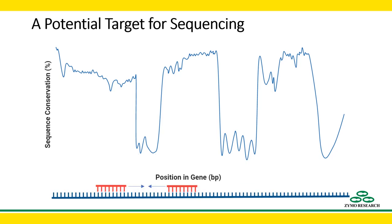We can do this by priming in the conserved regions and amplifying the variable regions by PCR for sequencing analysis. And for even higher resolution, if the gene structure is favorable, we can prime to more distant conserved regions to capture multiple variable regions in the same amplicon. This not only gives us the benefits of additional sequence, but also two separate variable regions tied together in a single sequencing read.